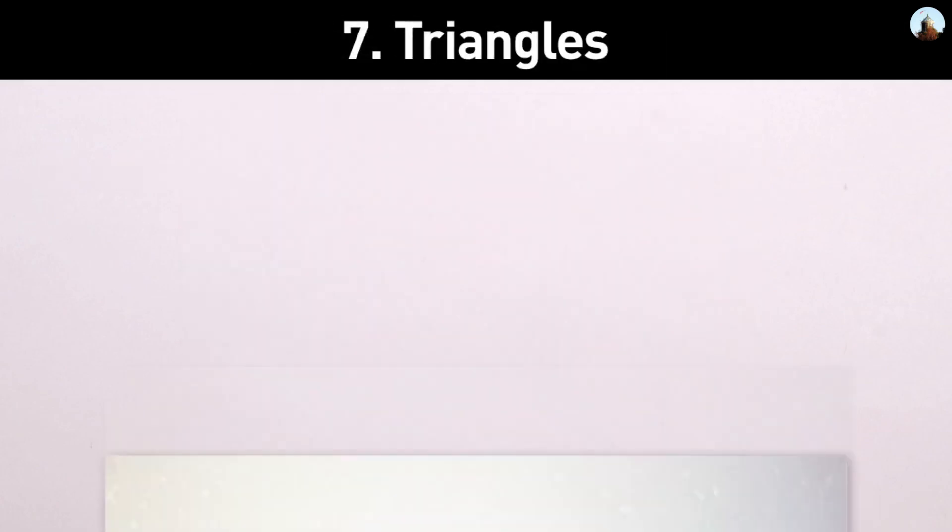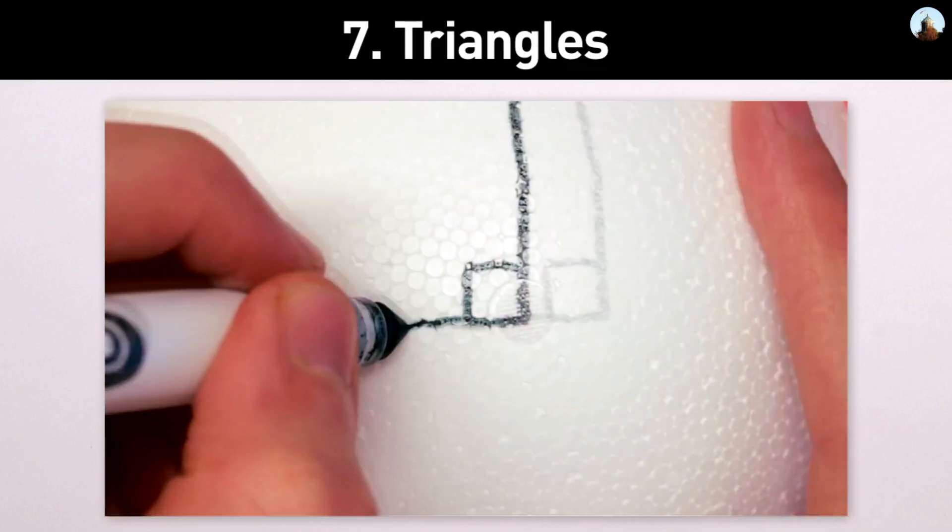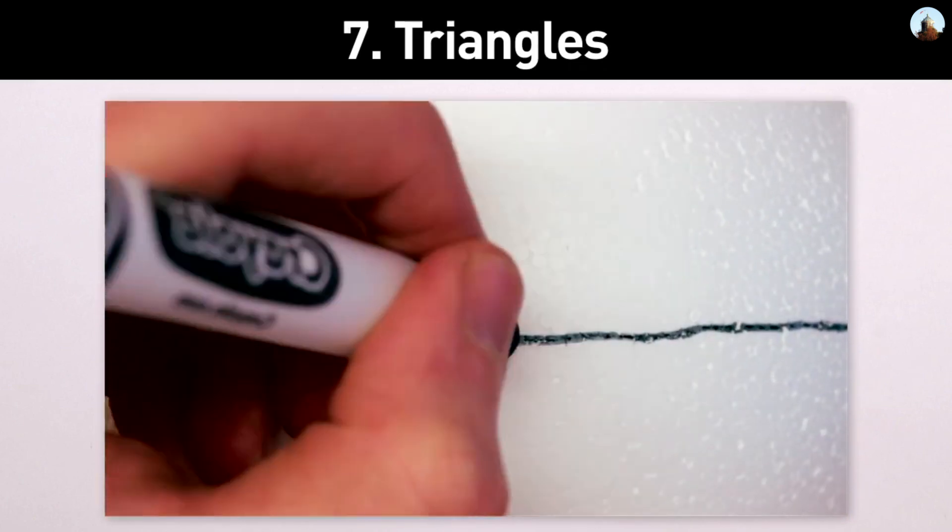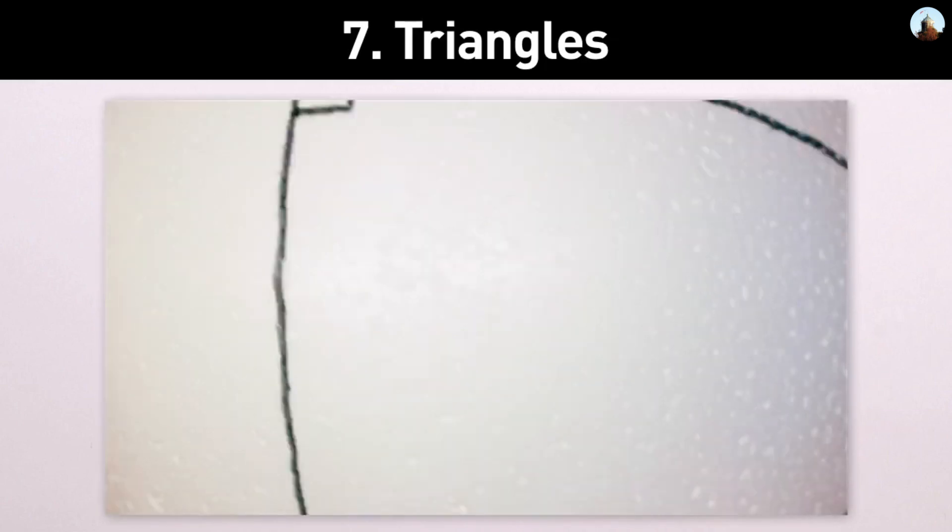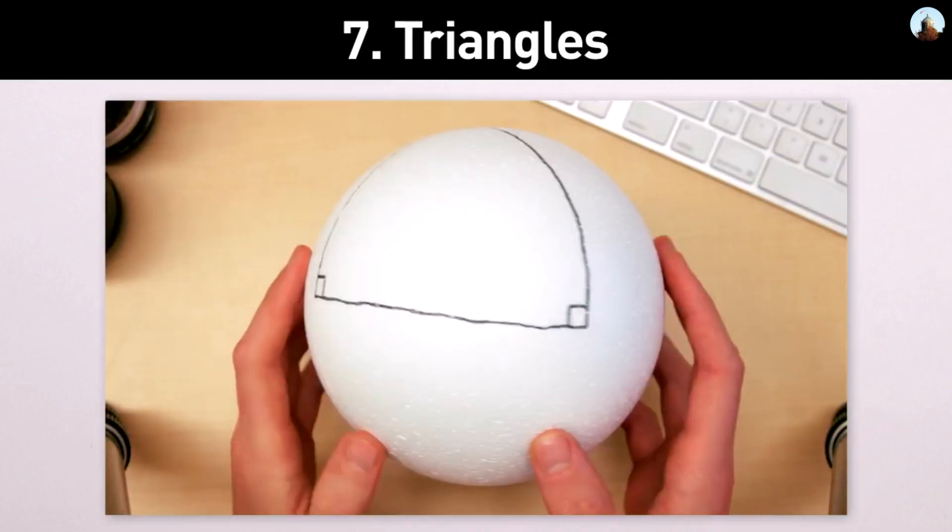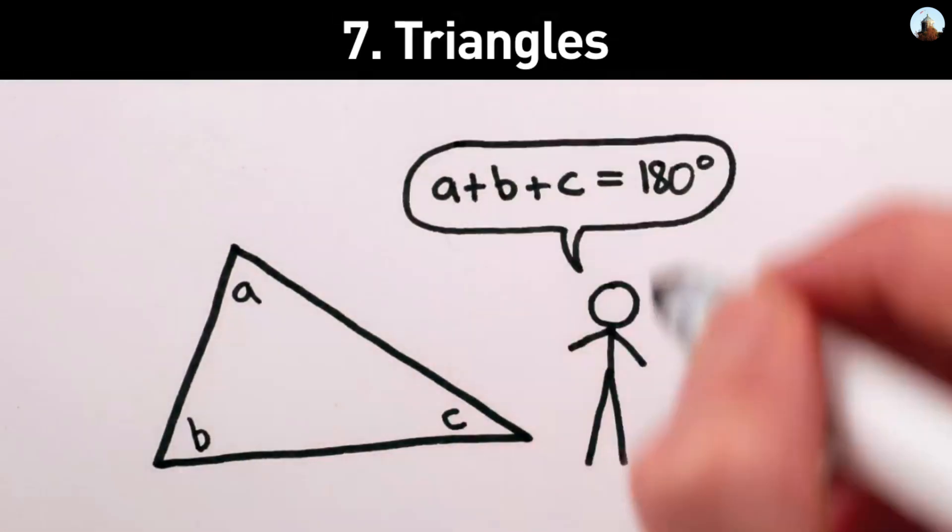7. Triangles. If you walk 10,000 kilometers straight along the Earth's surface, turn 90 degrees to your right, walk 10,000 kilometers more, turn right again and walk another 10,000 kilometers, you'll be back to where you started, having successfully made a triangle with three 90-degree angles. As any geometry student can tell you, this is impossible on a flat surface.